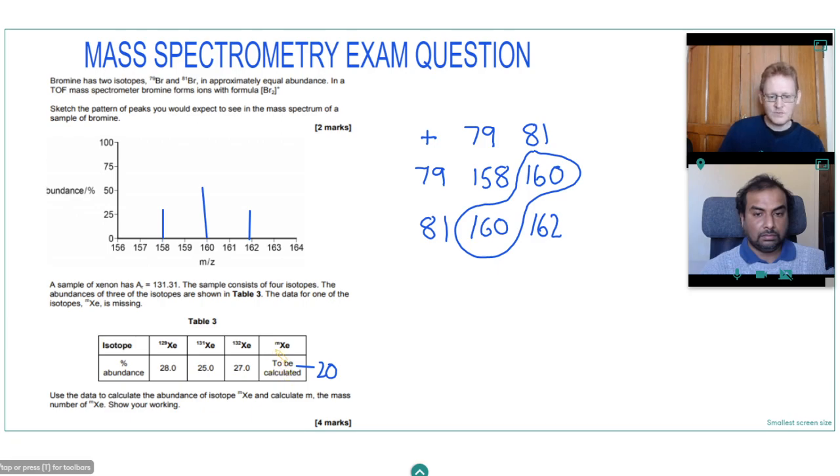And then we have to work out its actual mass of that isotope. But we've given the mean mass of all the isotopes. So it's a bit like doing a mean mass in maths. We know we've got 28 that weigh 129. So that would be the total mass for that isotope.